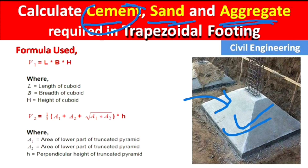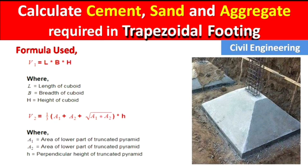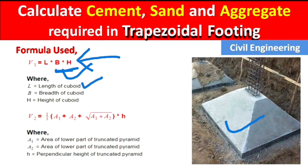The main formulas used for these types of footing are: V1 = L × B × H, which is the formula to calculate the volume of a cuboid, where L is the length, B is the width, and H is the height of the cuboid.